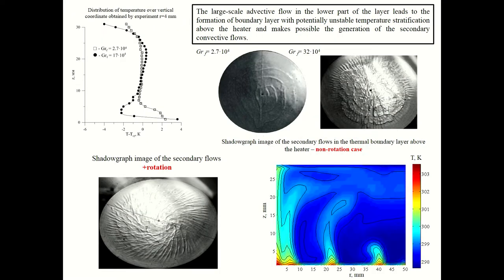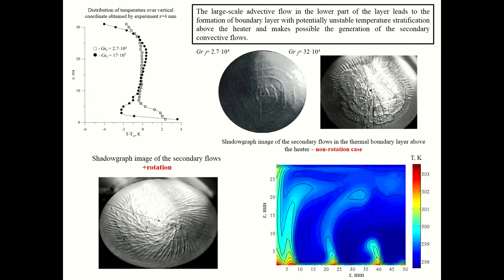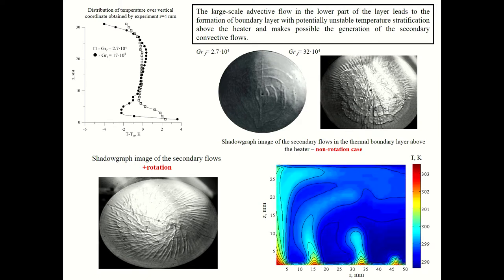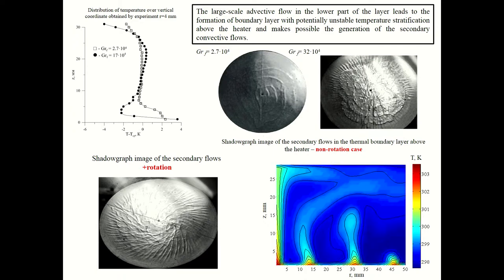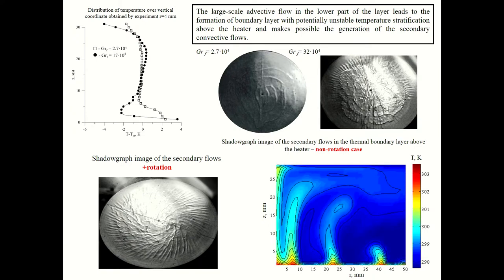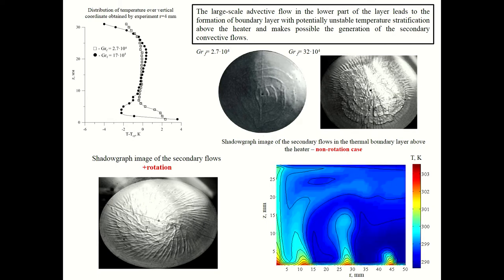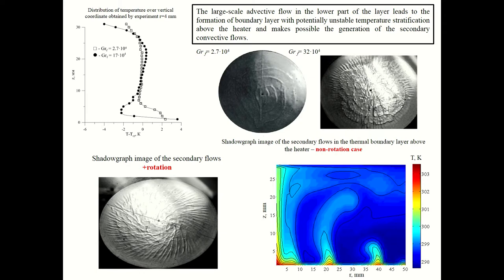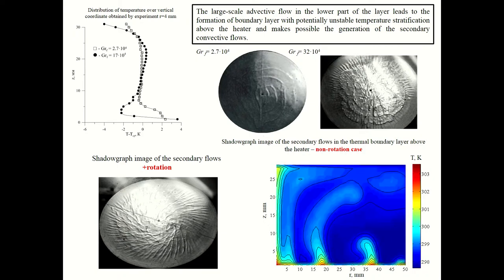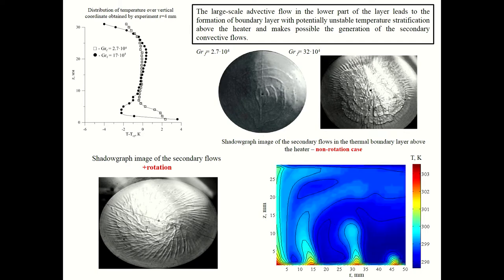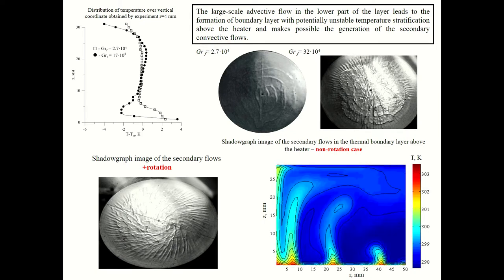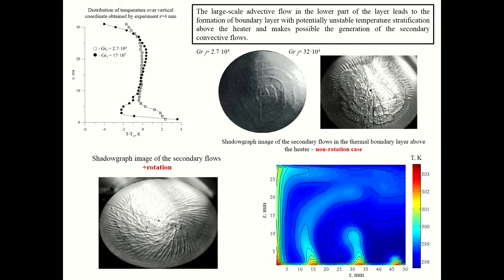Let's go to the results. The large-scale advective flow in the lower part of the layer leads to formation of boundary layer with potentially unstable temperature stratification. You can see this in the distribution of temperature along the vertical coordinate. This is the vertical profile under the heater, and in this boundary layer secondary structures appear. There's visualization of secondary flows by shadowgraph method. Without rotation, in weak heating regime, the secondary flows have a form of ring-like rolls, and with increasing the heating the structure of secondary flows became more complex. You can see radial rolls and some transverse rolls that move to the center of the vessel.